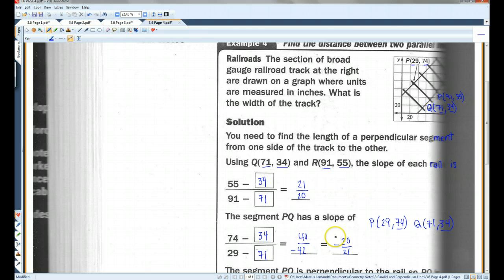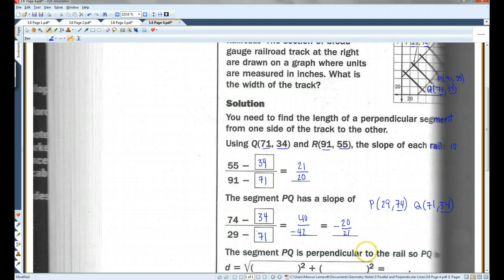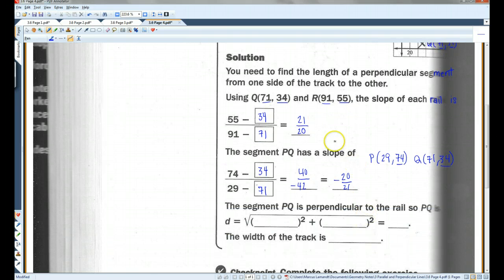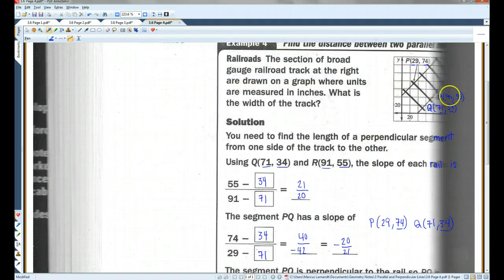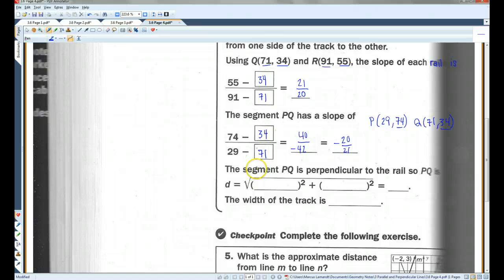So, this is negative 20 over 21. Hopefully, you guys can see. These two are opposite reciprocals of each other. Basically, if I were to flip this over and change the sign, I would get this one. And, if I were to flip this one over and change the sign, I would get this one. Because they're opposite reciprocals of each other, I know that these two lines are perpendicular. The segment PQ is perpendicular to the rail.